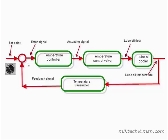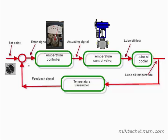The temperature control loop consists of a temperature transmitter, a temperature controller, and a temperature control valve. The lube oil temperature is controlled variable because it is maintained at a desired value or set point. Lube oil flow rate is the manipulated variable because it is adjusted by the temperature control valve to maintain the lube oil temperature.